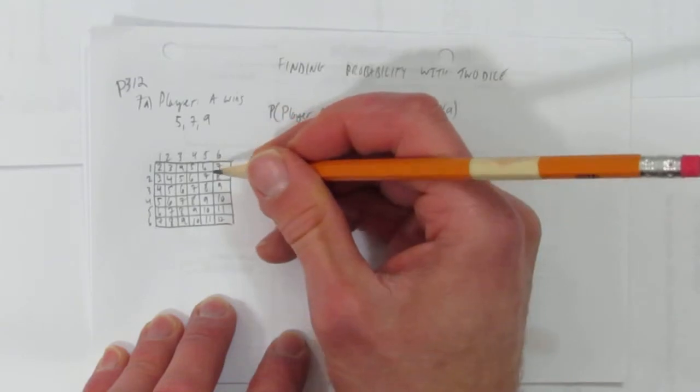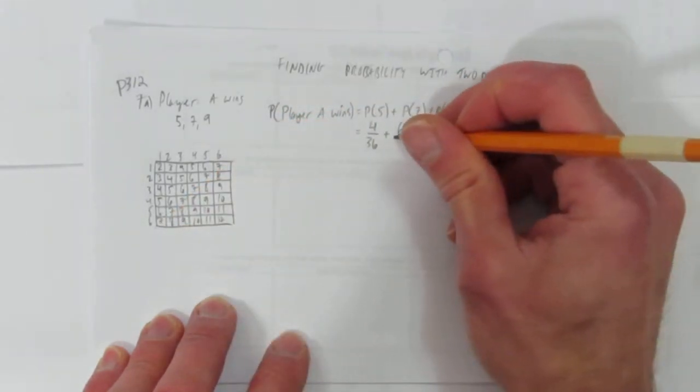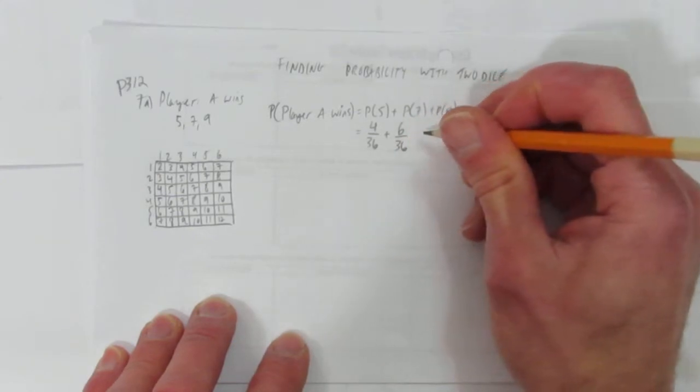What's the probability of rolling a 7? There's 1, 2, 3, 4, 5, 6 ways to roll a 7 out of 36 total ways.